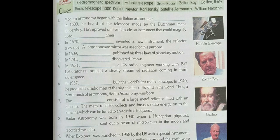Then come to question number 9. When Explorer 1 was launched in 1958 by the US with a special instrument, two donut-shaped regions of intense radiation around the earth were discovered. This was how satellite astronomy started.